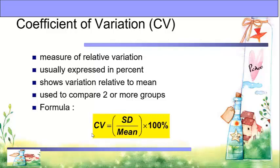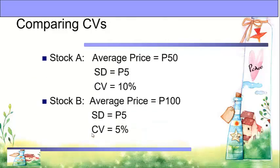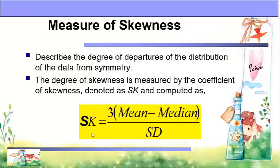Coefficient of variation measures relative variation, usually expressed as a percent. It measures variation relative to the mean and is used to compare two or more groups. The formula is: CV equals standard deviation divided by mean, times 100. Example: Stock A has an average price of 50 and a standard deviation of 5, giving a CV of 10%. Stock B has an average price of 100 and a standard deviation of 5, giving a CV of 5%. Although they have the same standard deviation, they have different averages, so they have different coefficients of variation.